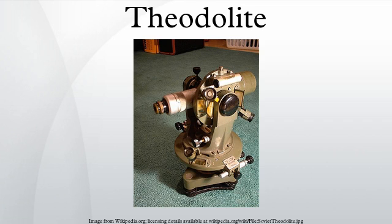A theodolite is a precision instrument for measuring angles in the horizontal and vertical planes. Theodolites are used mainly for surveying applications and have been adapted for specialized purposes in fields like meteorology and rocket launch technology. A modern theodolite consists of a movable telescope mounted within two perpendicular axes: the horizontal or trunnion axis, and the vertical axis. When the telescope is pointed at a target object, the angle of each of these axes can be measured with great precision, typically to seconds of arc.